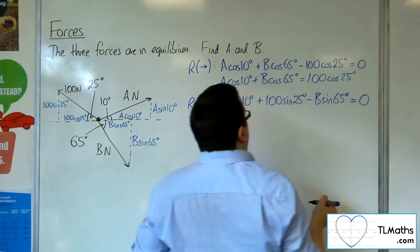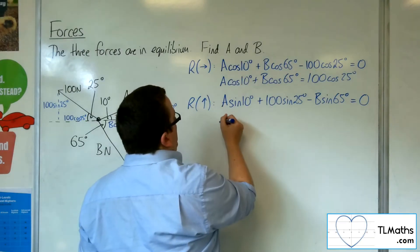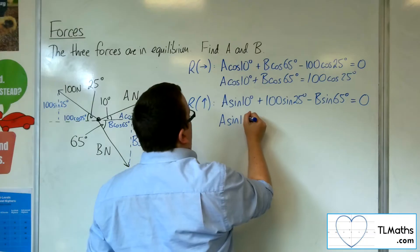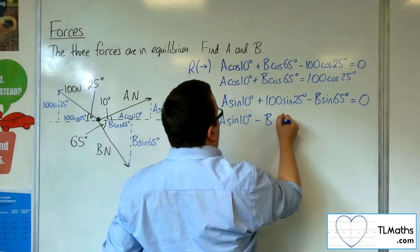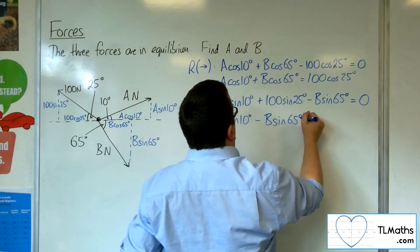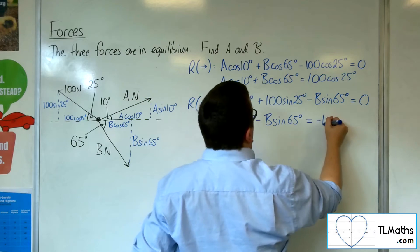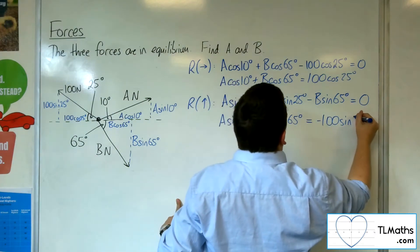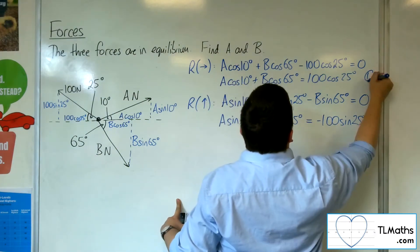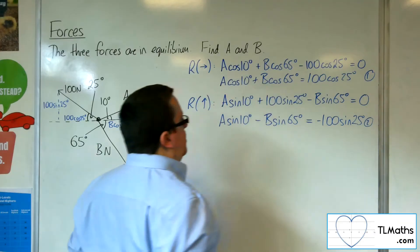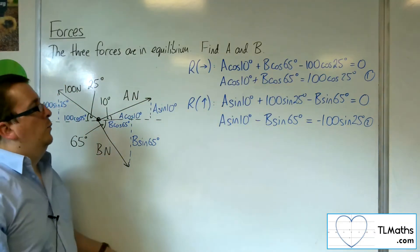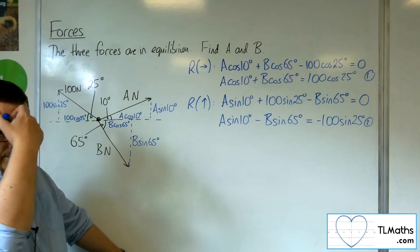And that's got to be equal to 0. So I'm going to rewrite that as A sin 10, take away B sin 65, is equal to minus 100 sin 25. So what we've got here are two simultaneous equations with two unknowns, the A and the B.